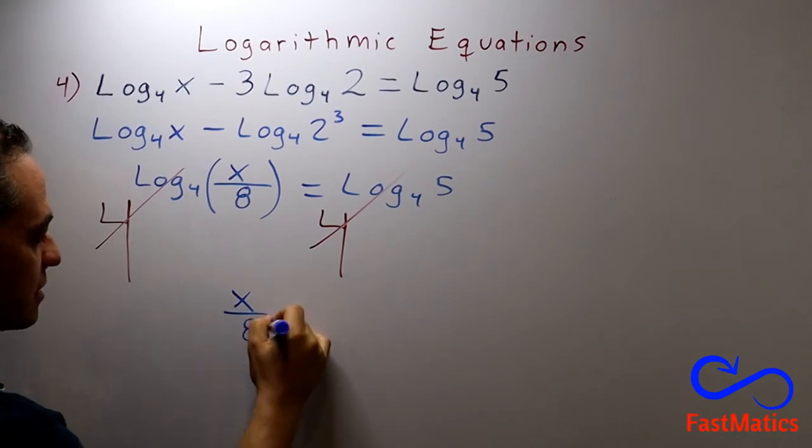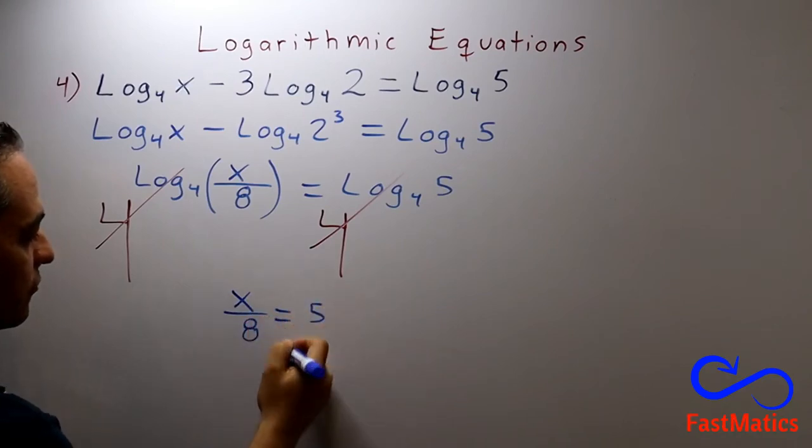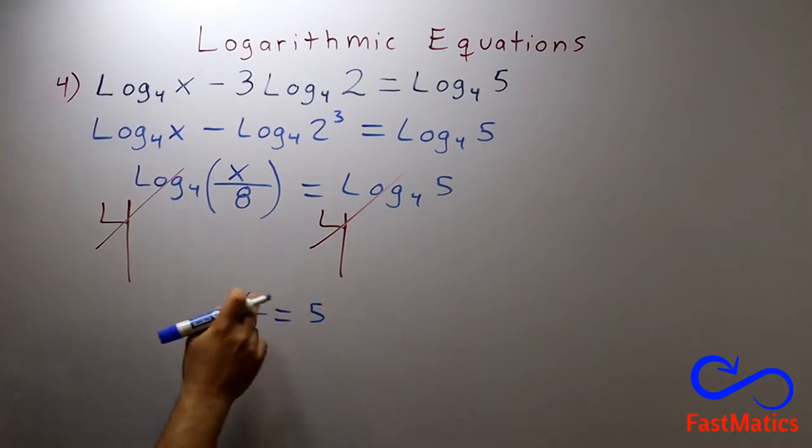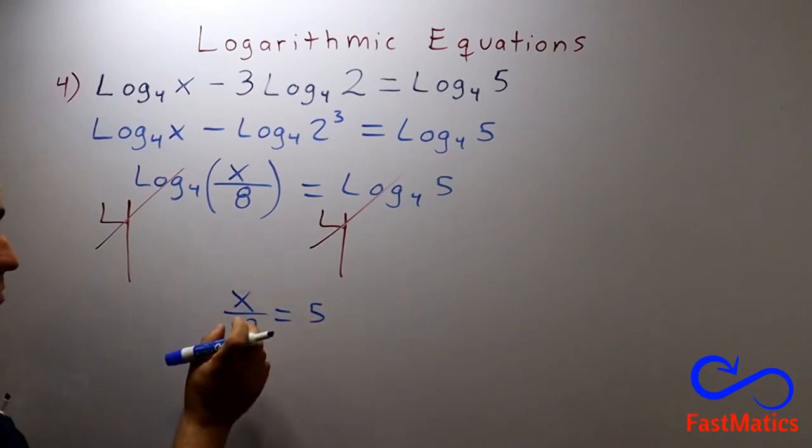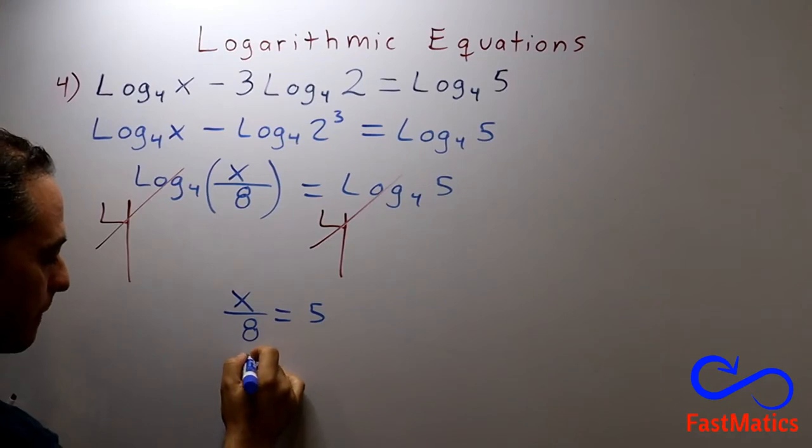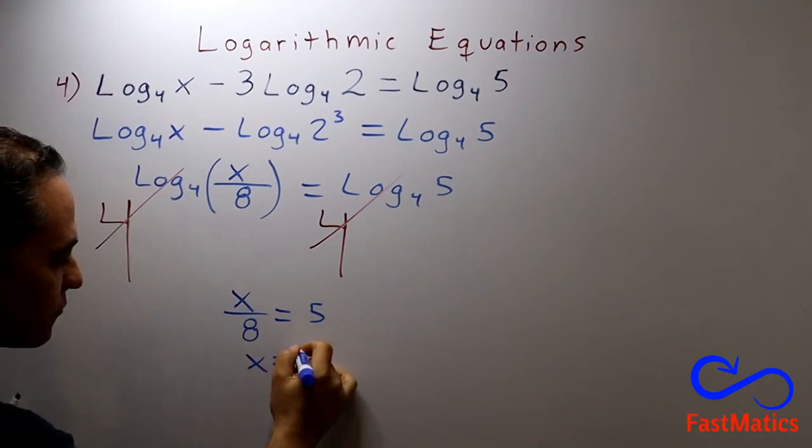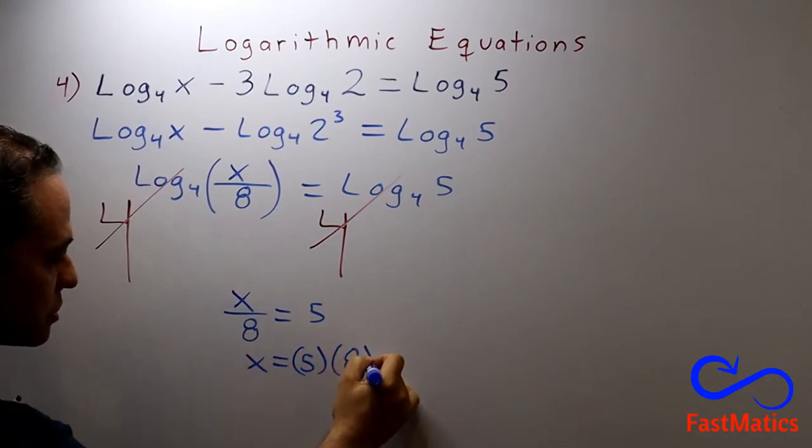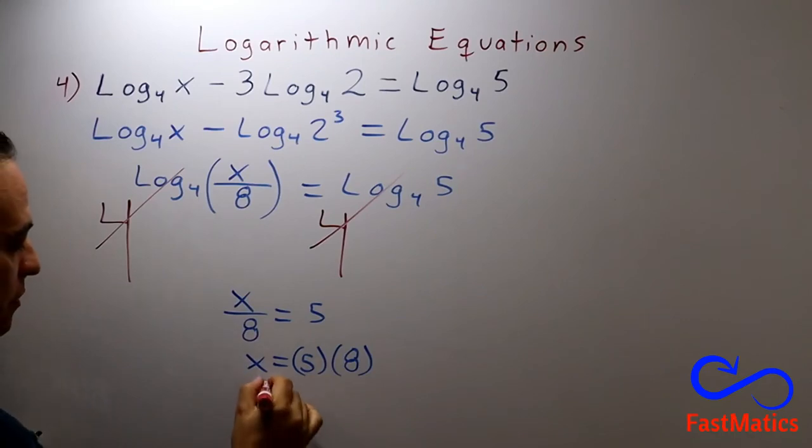x over 8 will be equal to 5. Very simple equation, linear equation. So we will pass the 8 multiplying. 5 times 8, and the answer will be 40.